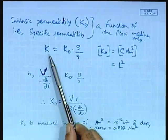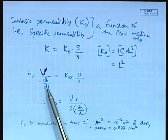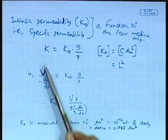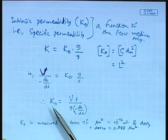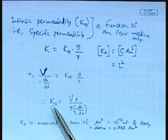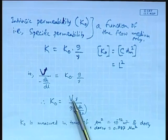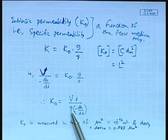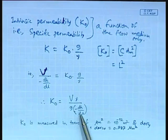By Darcy's equation, hydraulic conductivity or permeability can be expressed as velocity v of groundwater divided by the hydraulic gradient, that is −dH/dL. Equating that to k₀ × g/ν, and simplifying, we get an expression for intrinsic permeability as v × ν divided by g × (−dH/dL), which is the product of groundwater velocity and kinematic viscosity divided by the product of acceleration due to gravity and the hydraulic gradient.